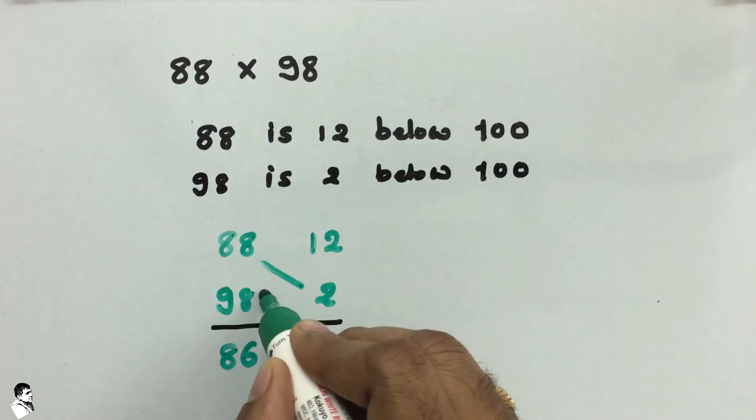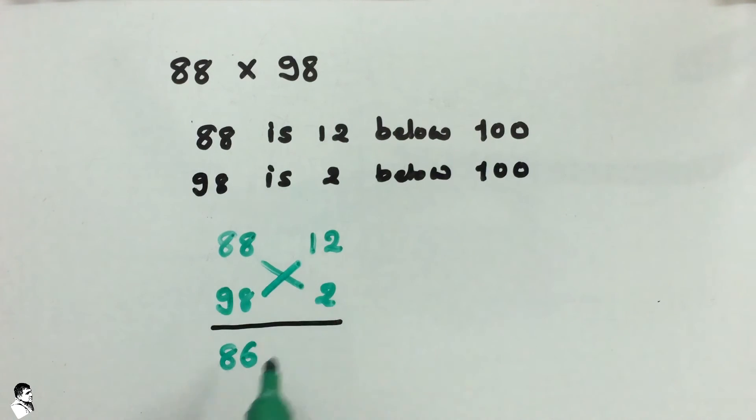88 minus 2 equals 86, or you can do 98 minus 12, which also equals 86. This is known as crosswise calculation.